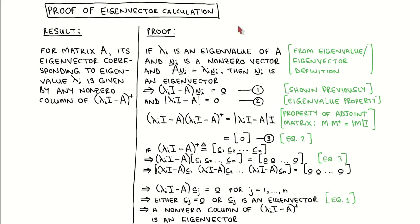The core idea of the proof is that we combine eigenvalue and eigenvector properties with a property of the adjoint matrix. The result follows directly from this.